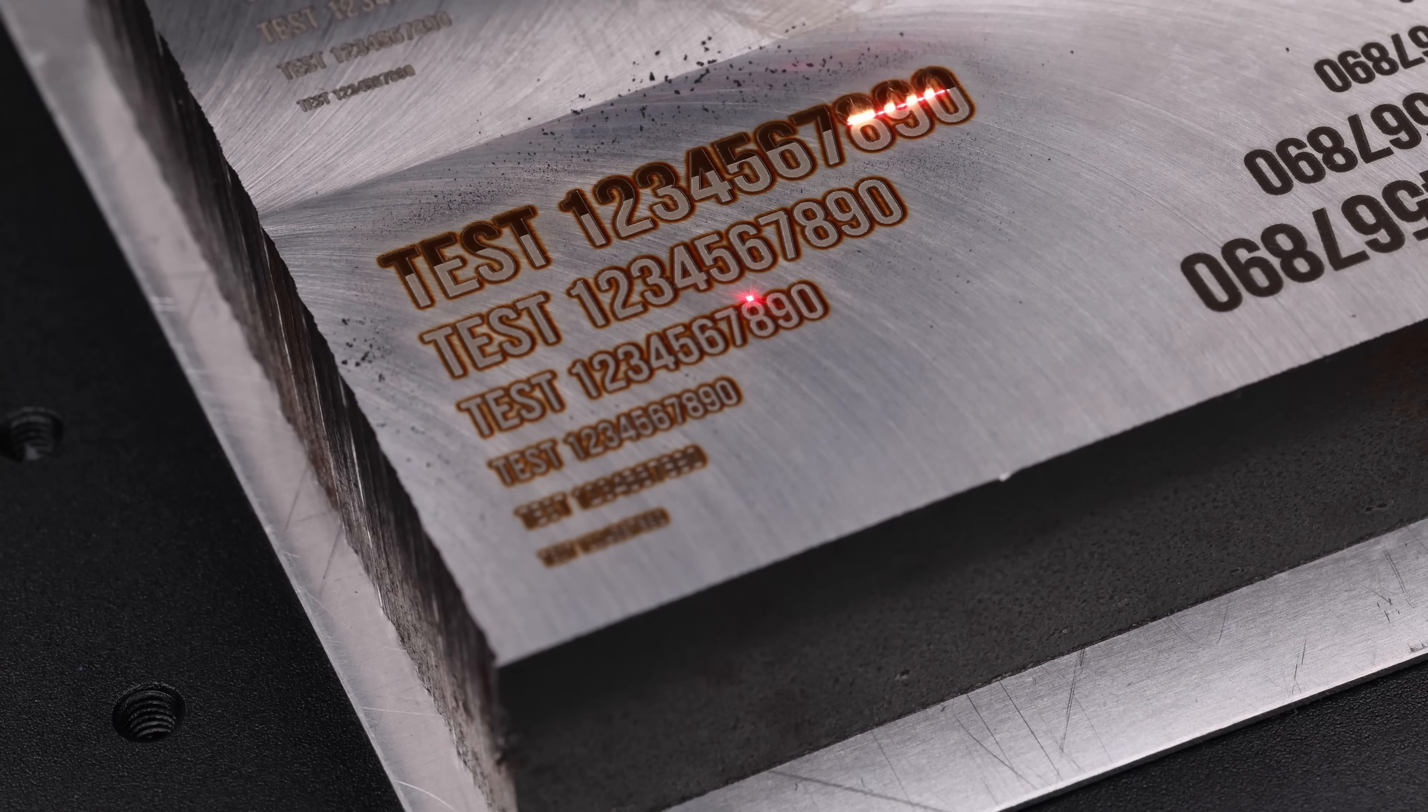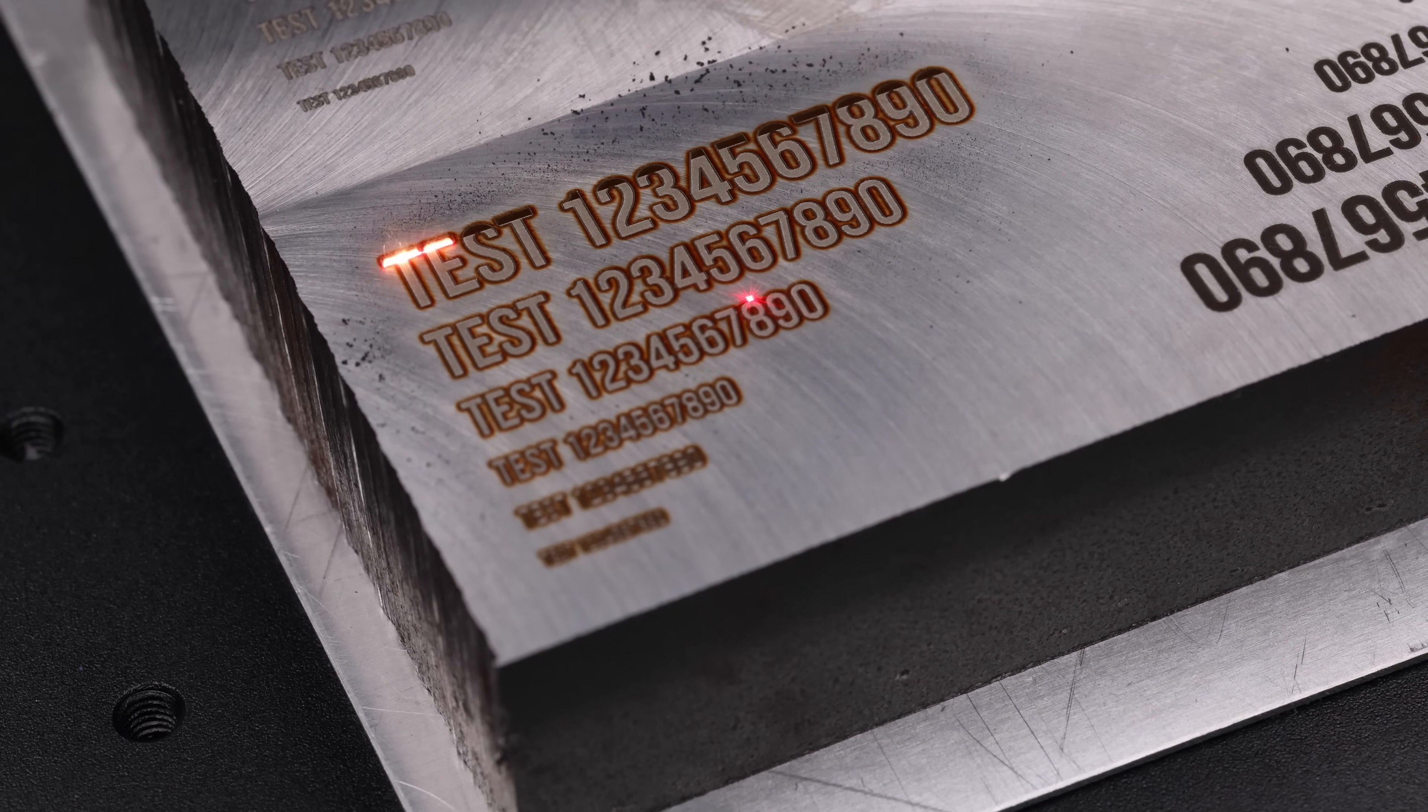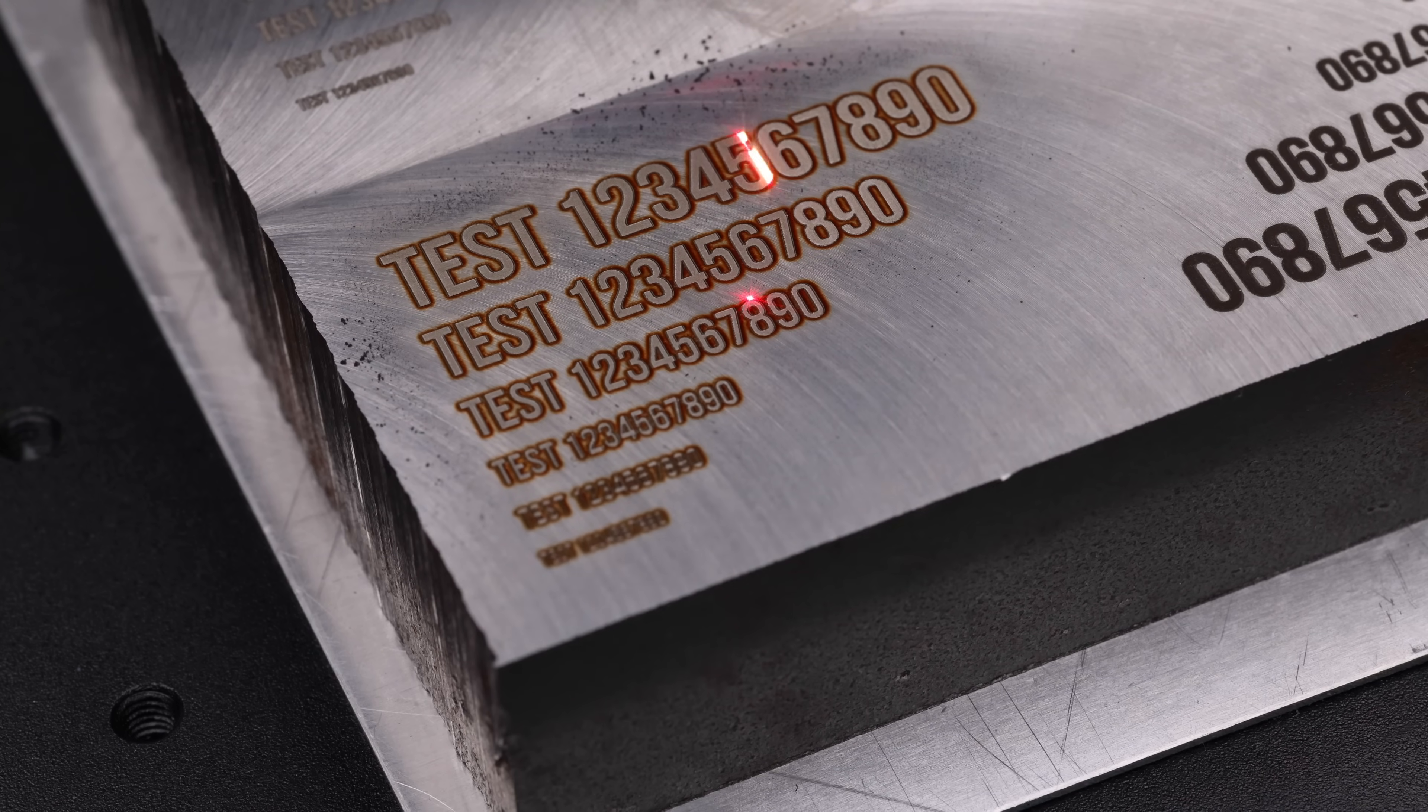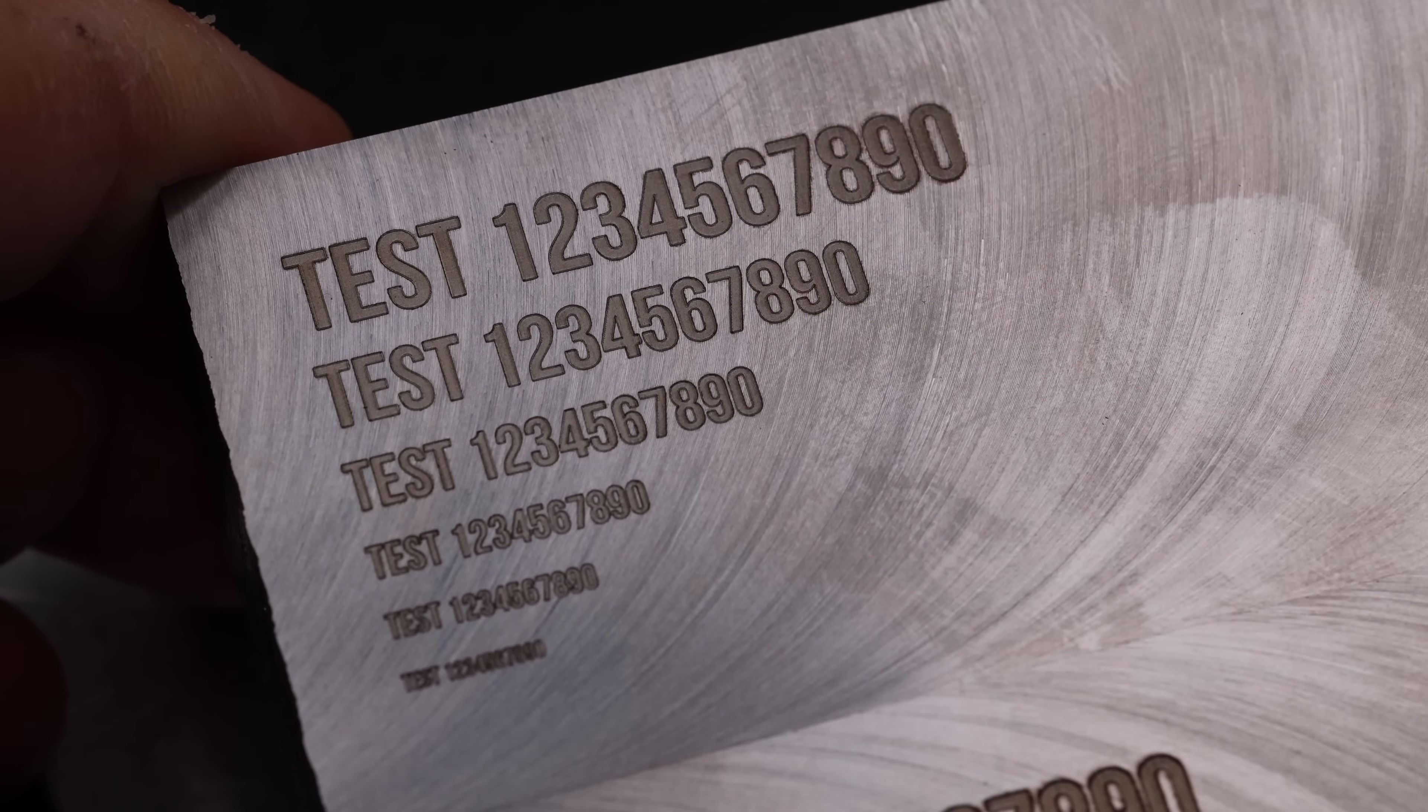This removes the blackened fill and gives us a cleaner look. The scorching that you can see around the edges of the letters can easily be removed just by rubbing it with your finger after the cuts finished. And this is the end result.